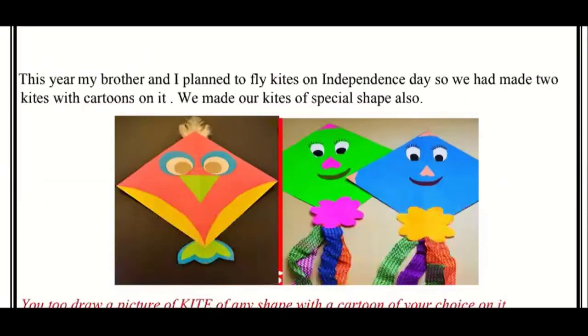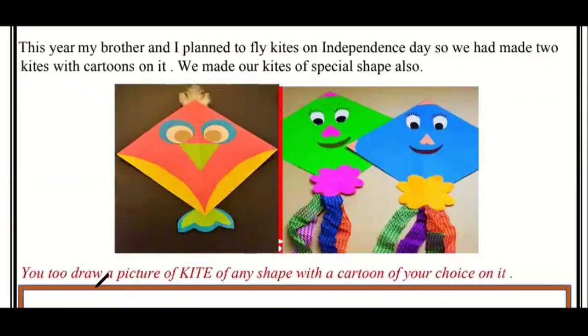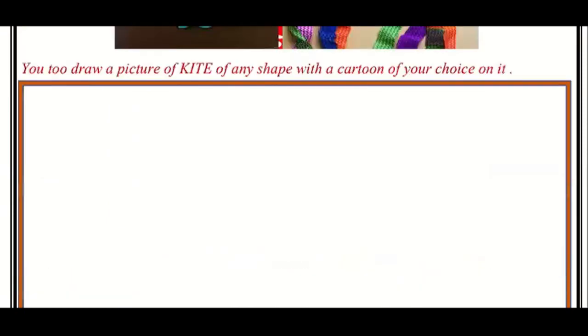You can also make a special shape. You can draw a picture of a kite of any shape with a cartoon of your choice. Below the space, you have to put your copy in your notebook on any blank page or drawing page. You have to make a kite — you can make more than one. Like they made two, you can make three or four. We also made four kites.